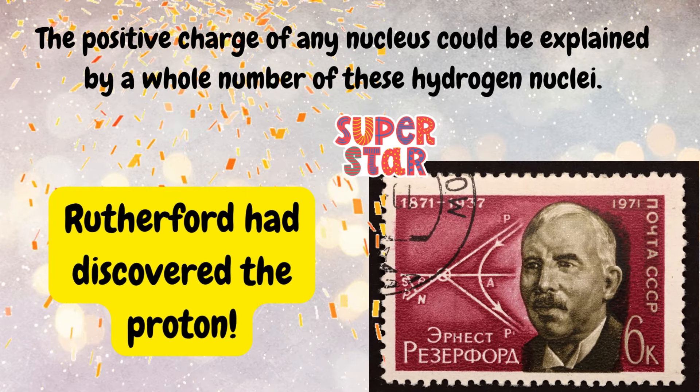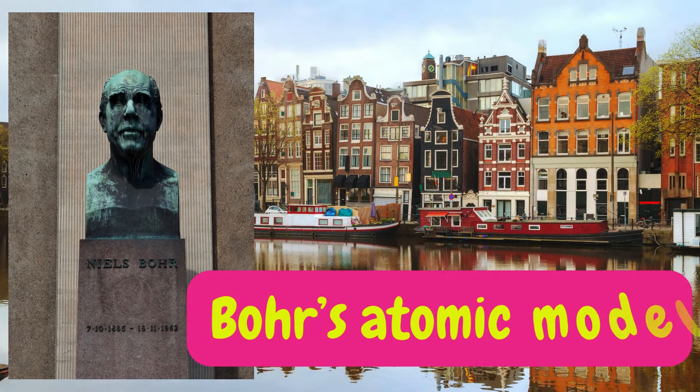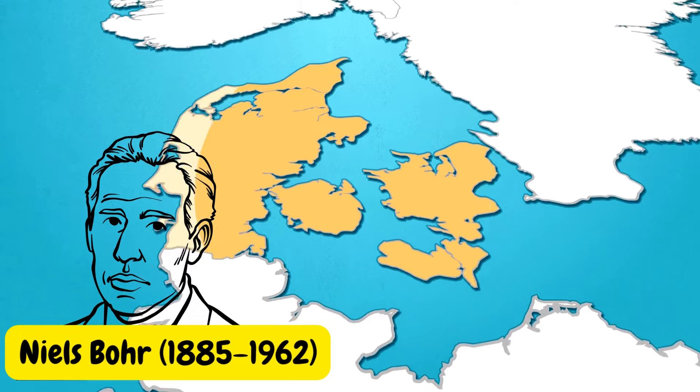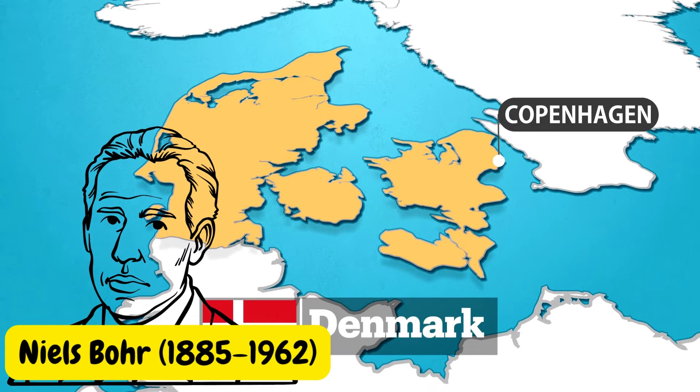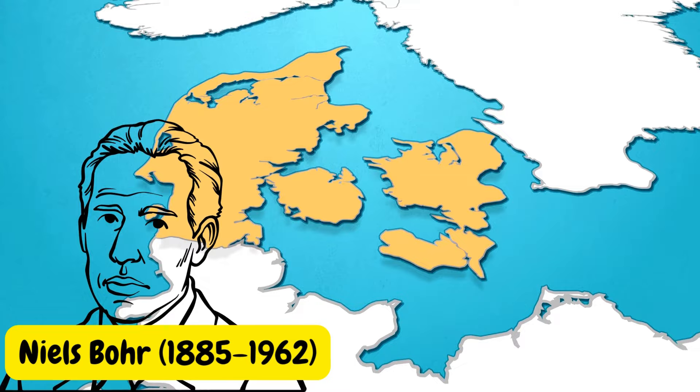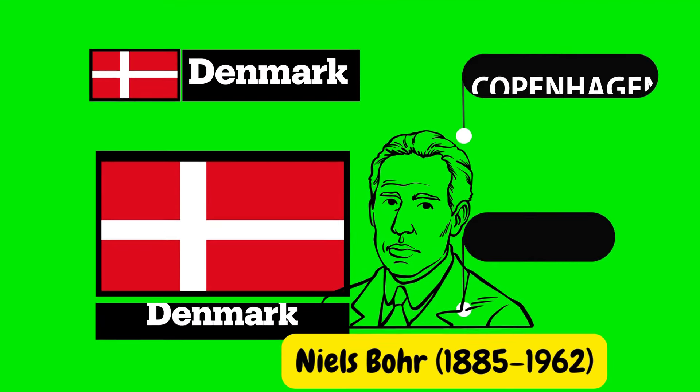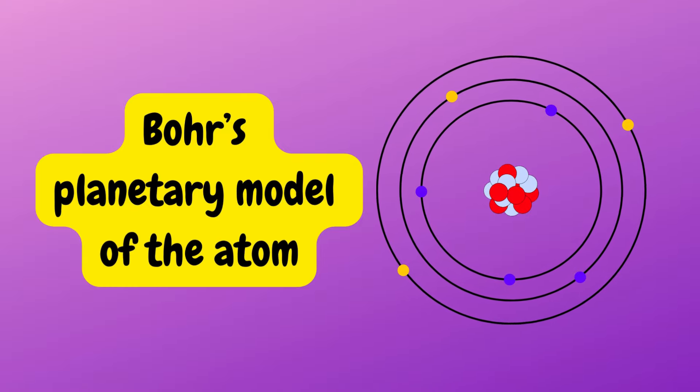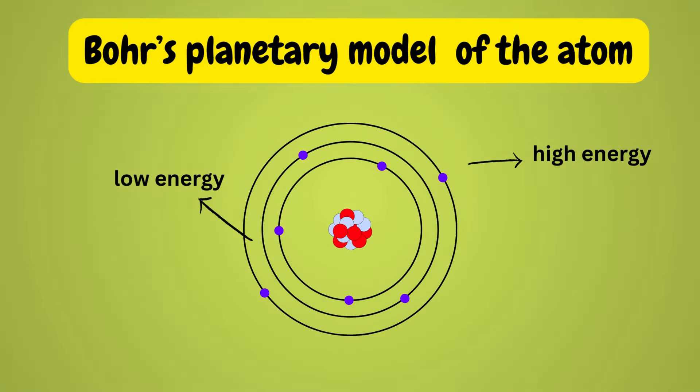Bohr's atomic model. The Danish physicist Niels Bohr (1885 to 1962) made significant contributions to atomic theory in the early 20th century. In his planetary model of the atom from 1913, Bohr proposed that electrons orbit the nucleus in fixed energy levels or orbits around the nucleus.